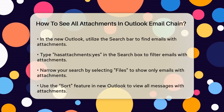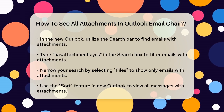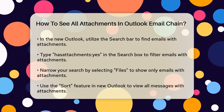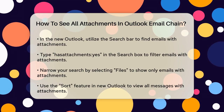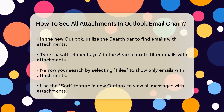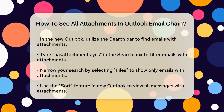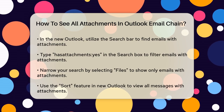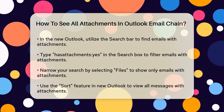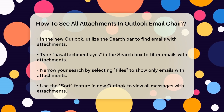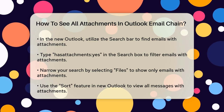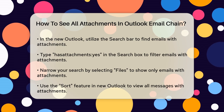For those using the new Outlook, you can utilize the search bar. Click in the search box at the top of your message list and type 'Has Attachments: Yes'. This will show you all the emails in the selected mailbox that contain attachments. You can also narrow down your search by selecting Files from the search options to display only emails with attachments.